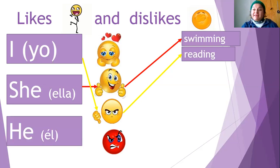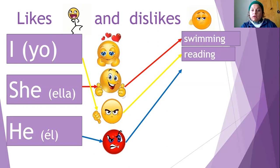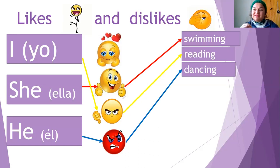Otro sujeto. He. Él. He. Hates. Dancing. He hates dancing. Y esa es una oración. He hates dancing. Él odia bailar.